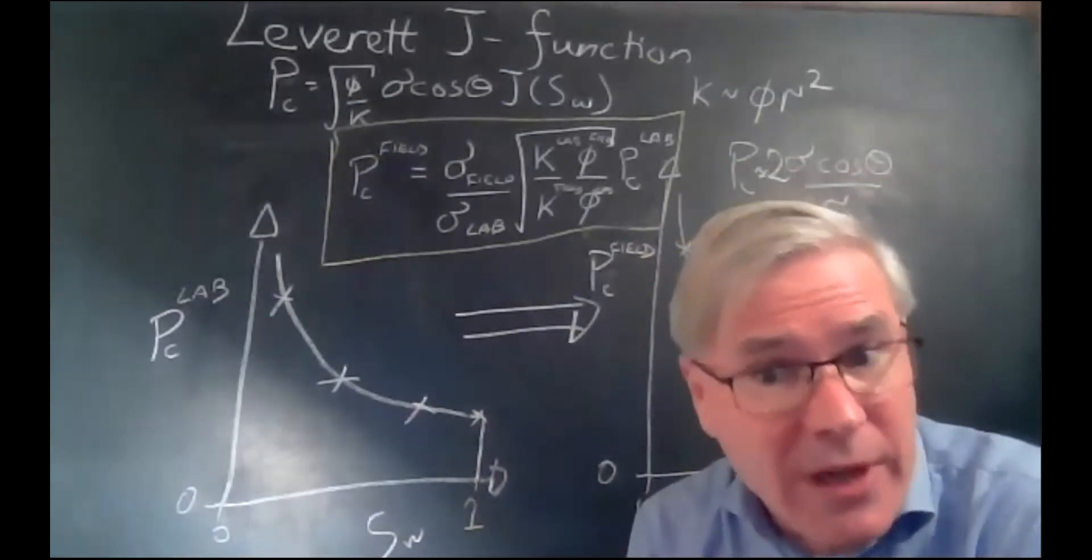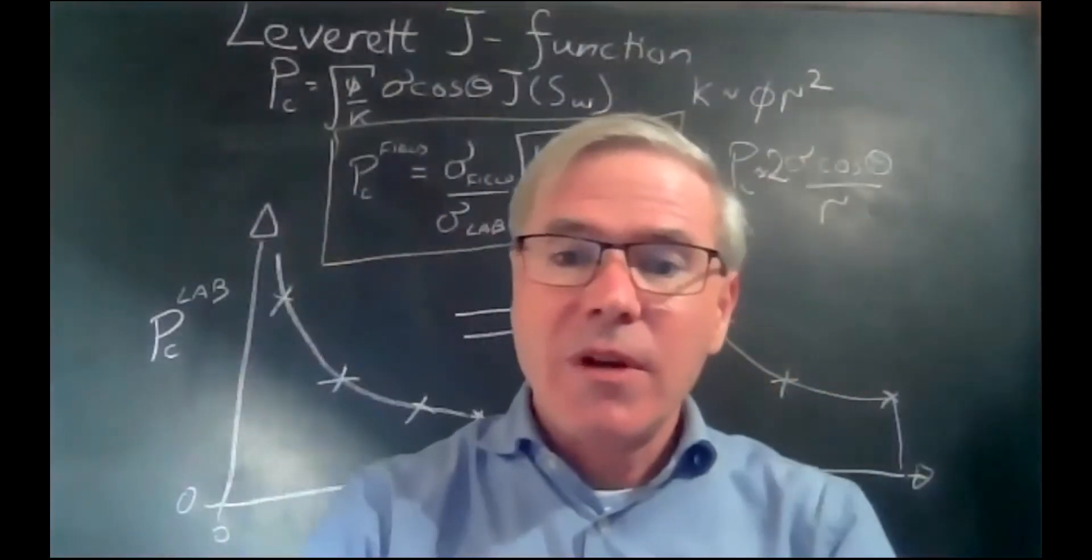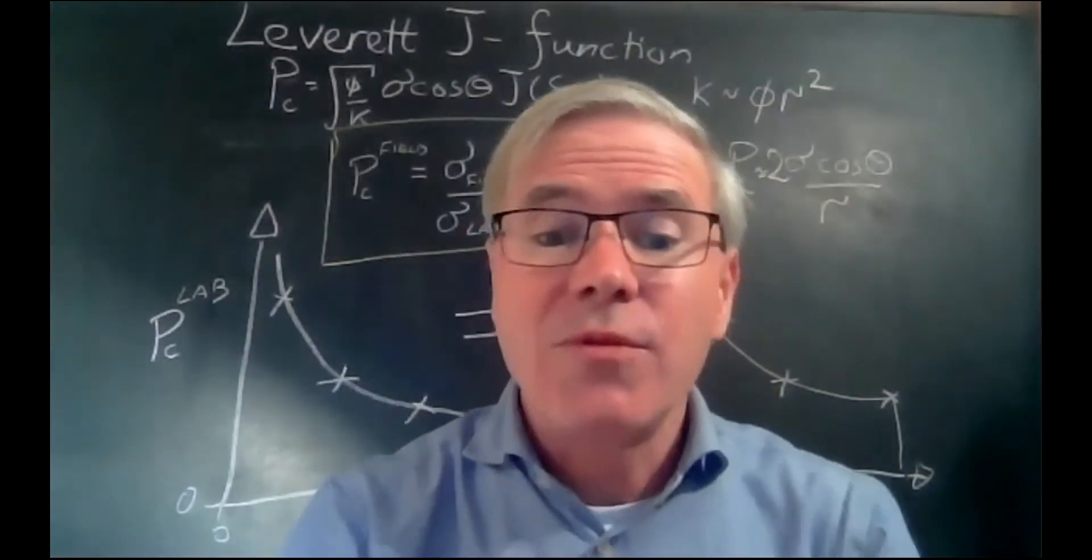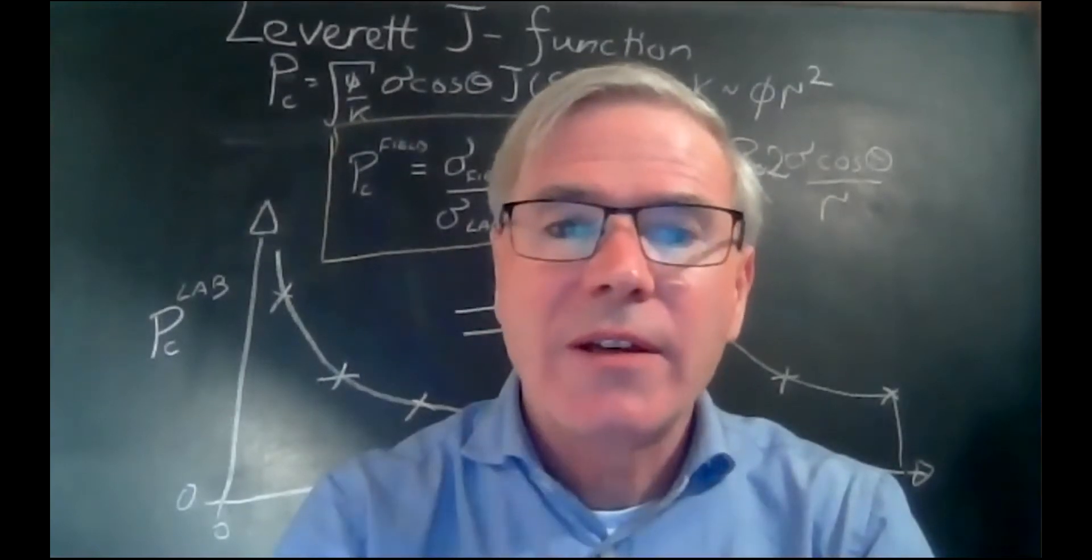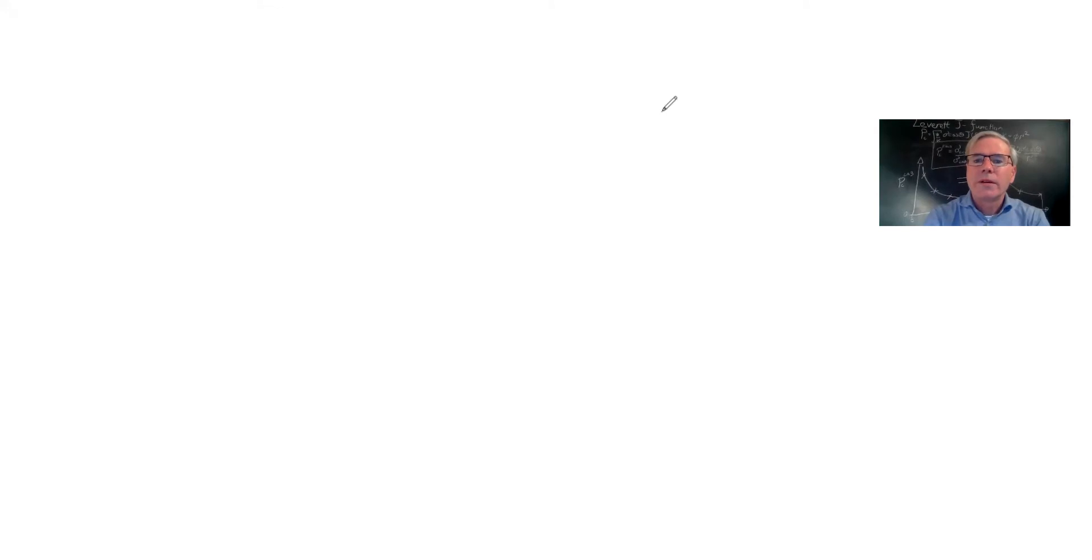How do we actually get a real number out rather than waving our hands and hoping for the best? And the way in which we do it is through what's called the Leverett J function. So all the equations are on the board, but what I'm going to do is use the whiteboard to go through this. Here is the whiteboard.